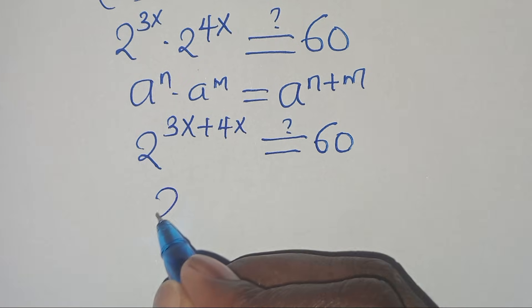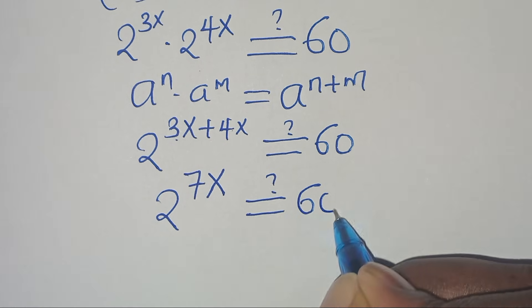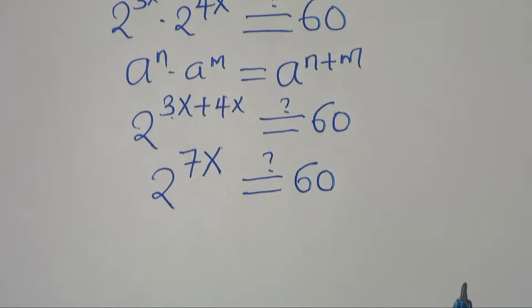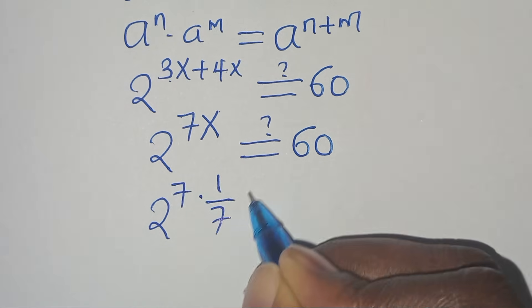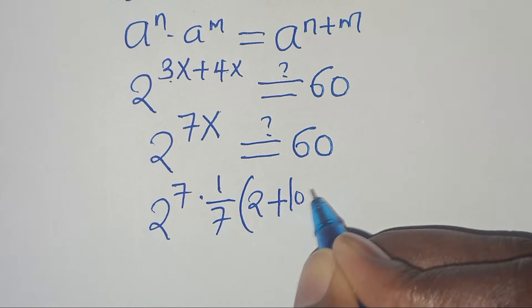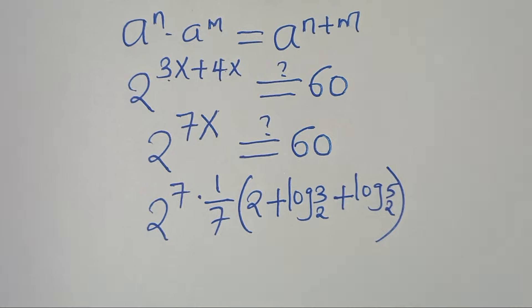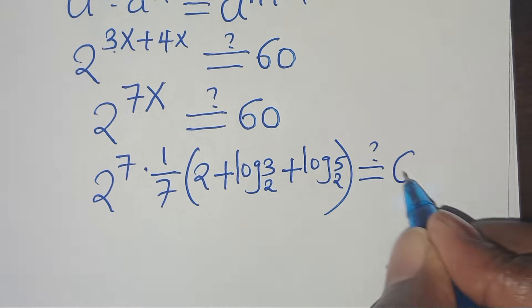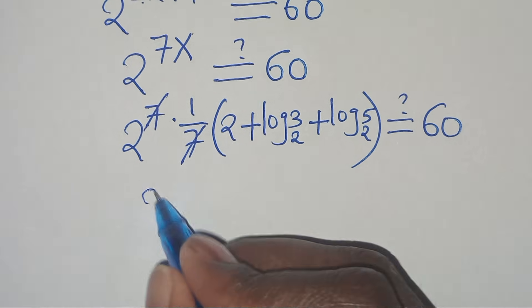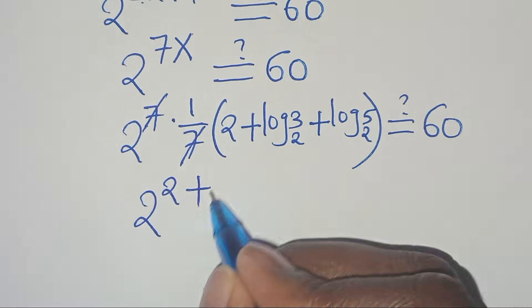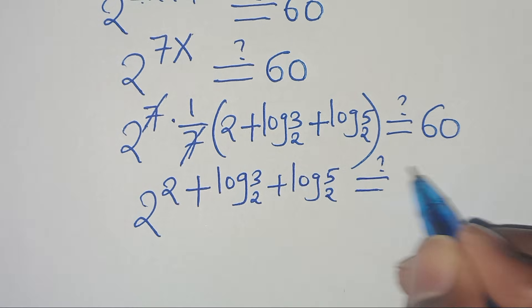So we have 2 to the power of 7x, which should give us a value of 60. Now we substitute the value of x, so we have 2 to the power of 7 times 1 over 7, times the parentheses 2 plus log 3 to base 2 plus log 5 to base 2. We can simplify 7 and 7, so now we have 2 to the power of 2 plus log 3 to base 2 plus log 5 to base 2, and this should give us a value of 60.